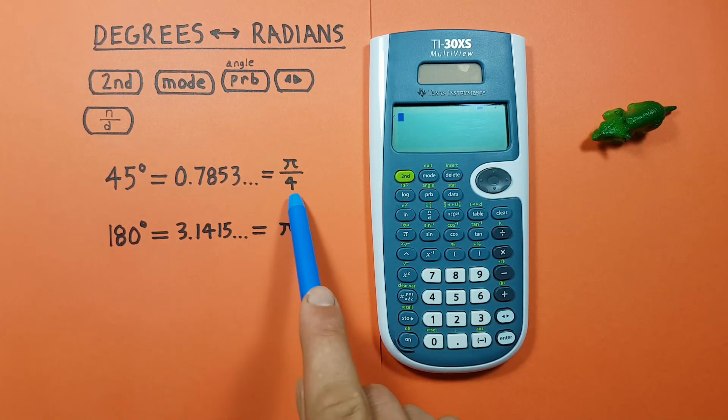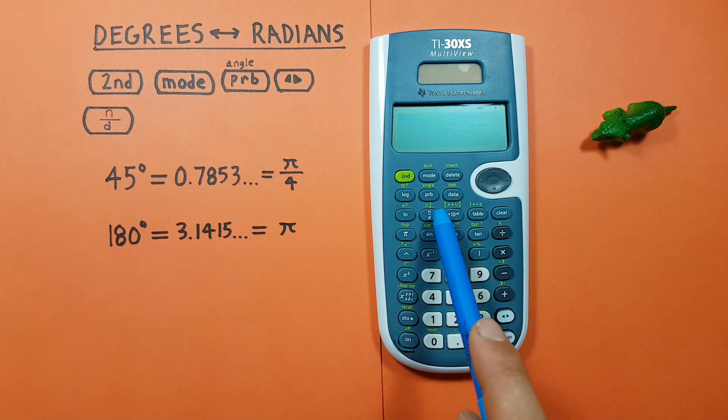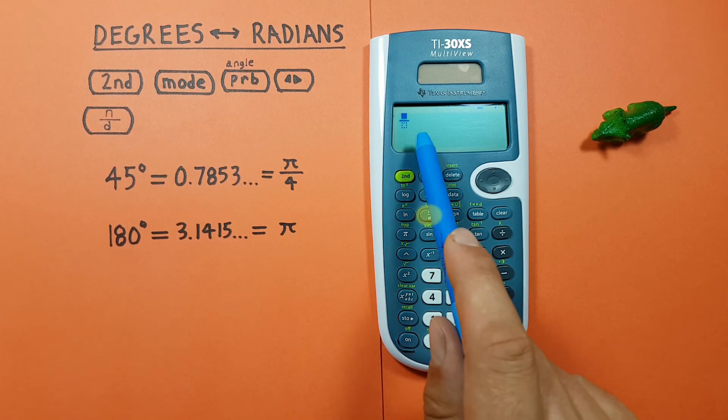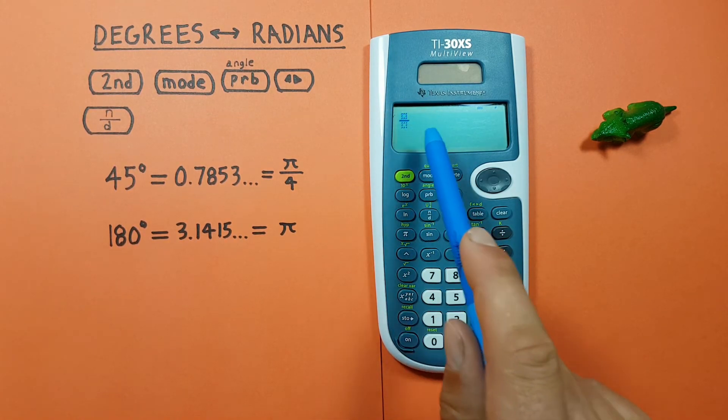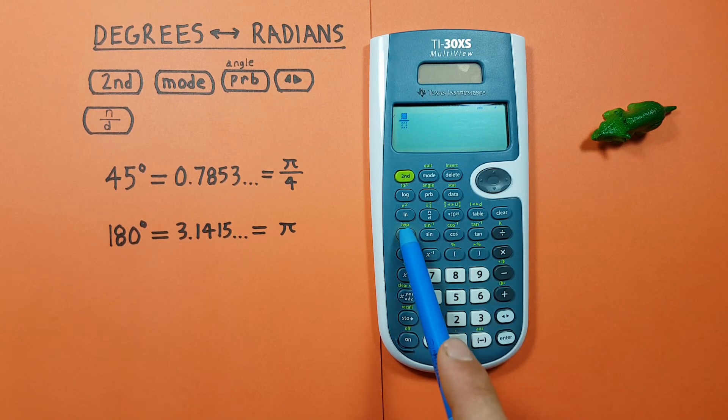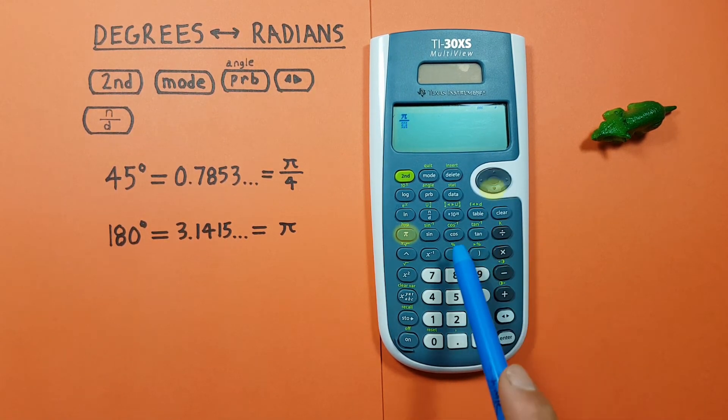Next, we enter our radians. So we have pi over 4 here, which is a fraction. To do this, we can press the n over d, or fraction key here, which puts a fraction on our screen. And then we put our pi over 4.